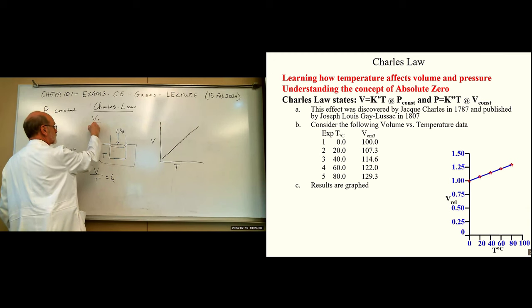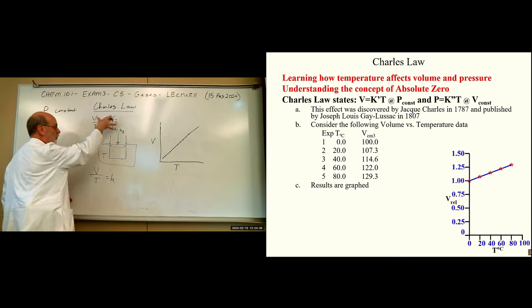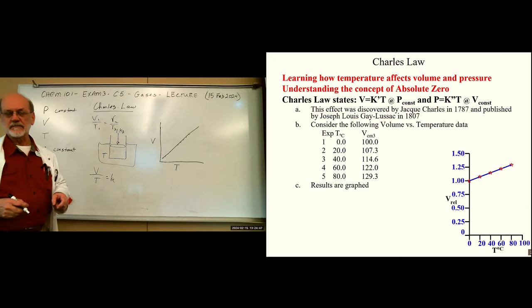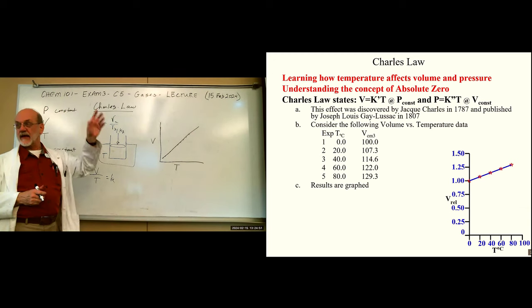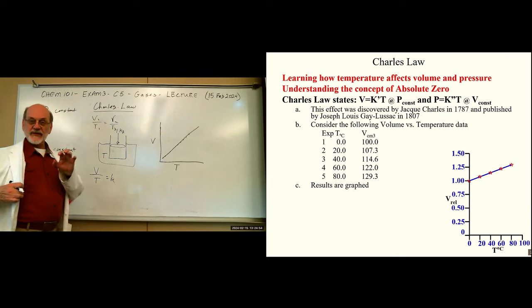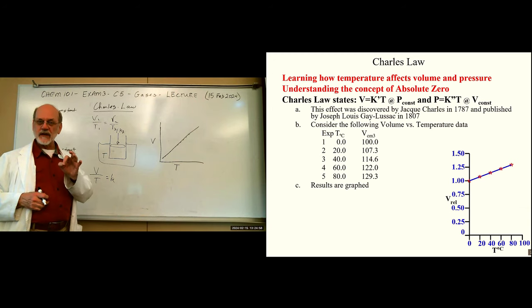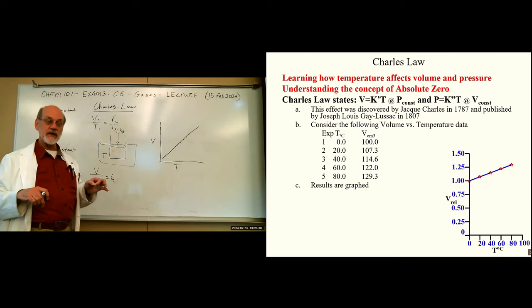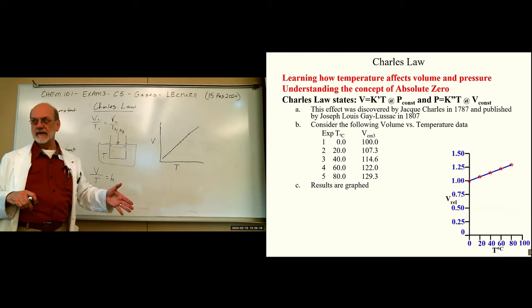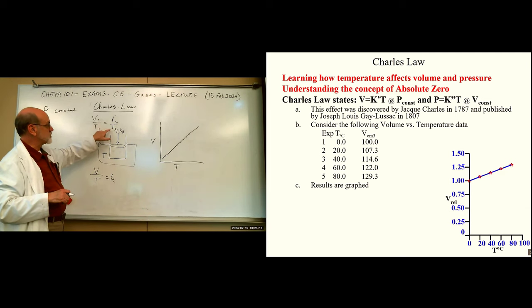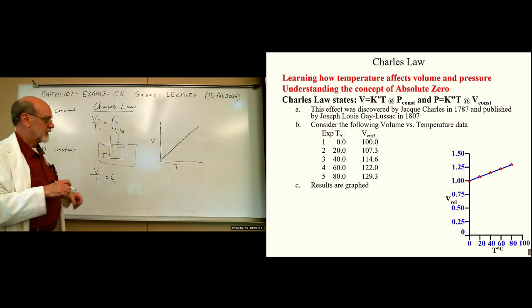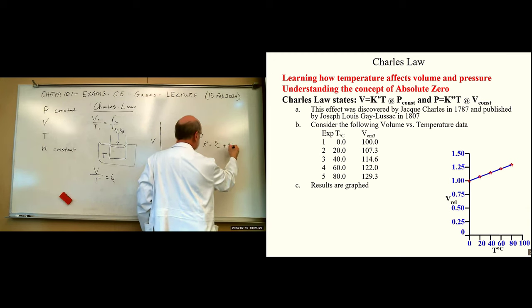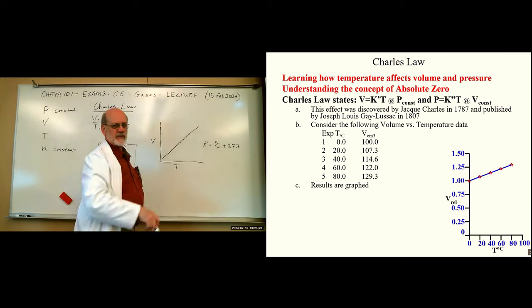We can write this as V₁/T₁ = V₂/T₂ — a before-and-after situation. The problem is you can't use negative temperature values. So about the same time, a new temperature scale was developed called Kelvin, based upon the Celsius scale but with all positive values. Zero on the Kelvin scale is absolute zero — there is no negative. When you use Charles' Law, temperatures must be converted to Kelvin: Kelvin equals Celsius plus 273.